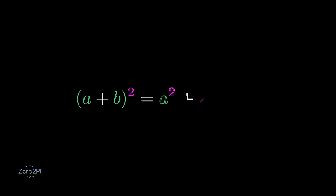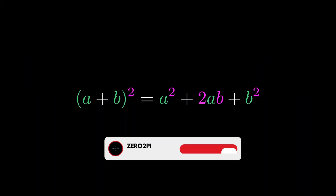Here is a question for you guys: the second power of a number is always a square. So is the whole square of the sum of two numbers always a square too? Let me know in the comments below. The answer is in the video. And if you liked the video, don't forget to subscribe and hit the bell notification icon.